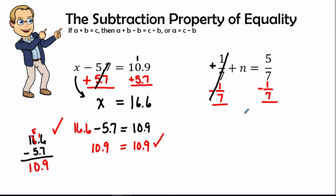These are inverses of each other and equal 0, leaving positive n by itself. We have our equal signs in line, and we can do this problem horizontally.